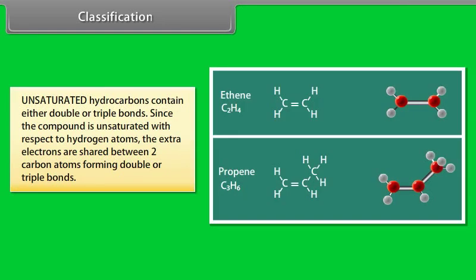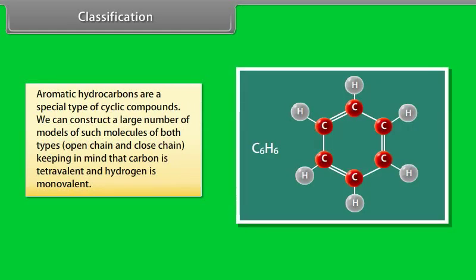Unsaturated hydrocarbons contain either double or triple bonds since the compound is unsaturated with respect to hydrogen atoms. The extra electrons are shared between two carbon atoms forming double or triple bonds. Aromatic hydrocarbons are a special type of cyclic compounds. We can construct a large number of models of such molecules of both types, open chain and closed chain, keeping in mind that carbon is tetravalent and hydrogen is monovalent.